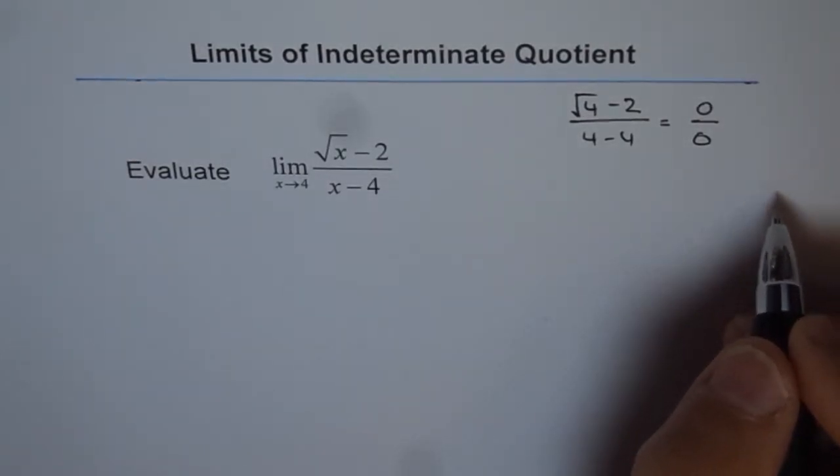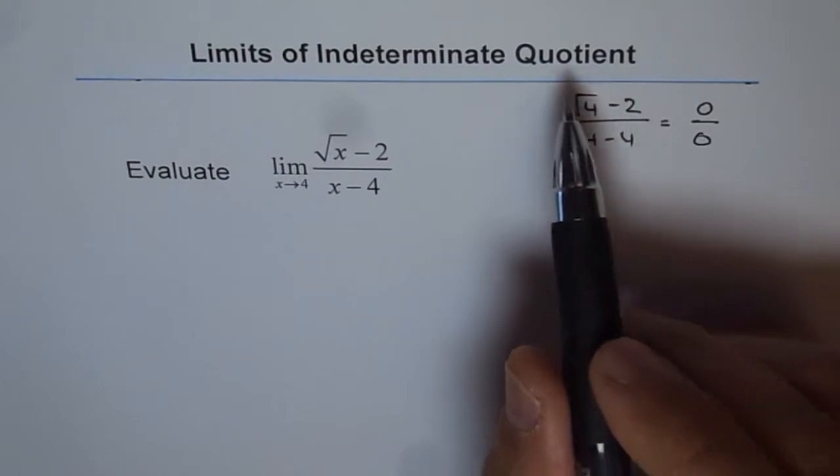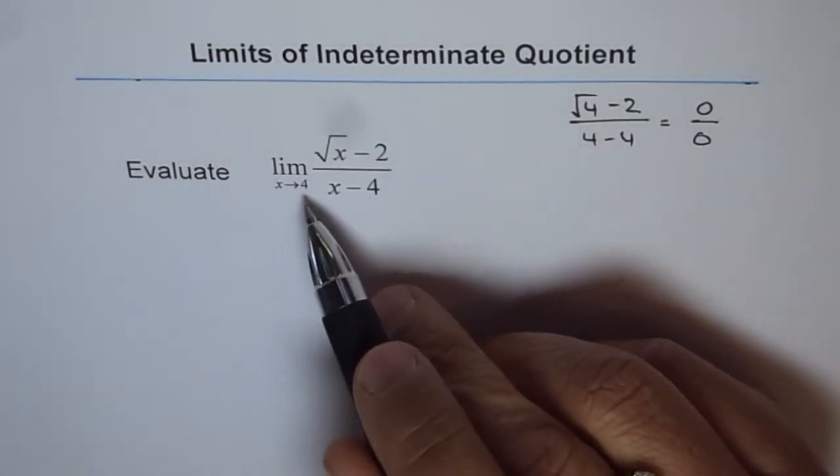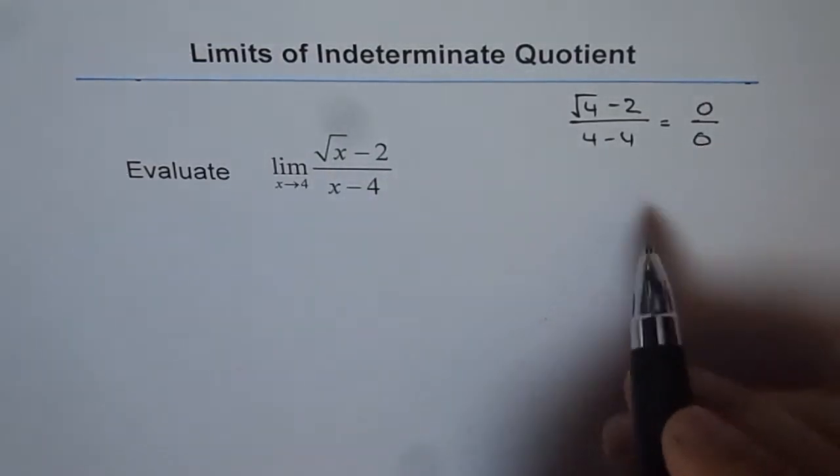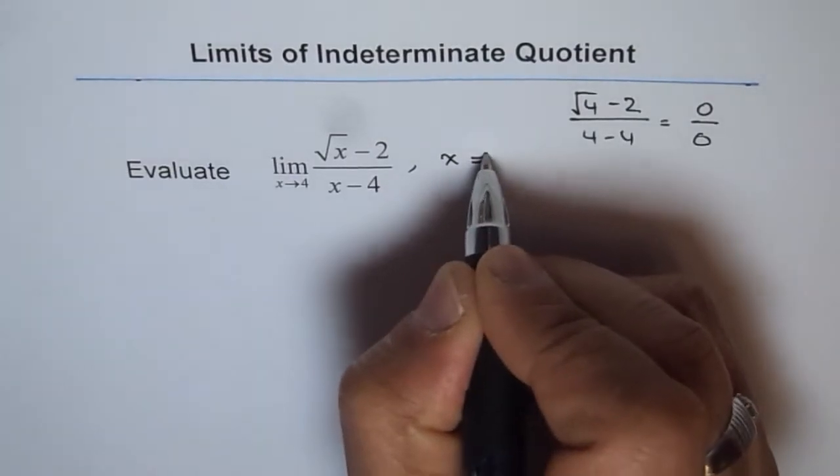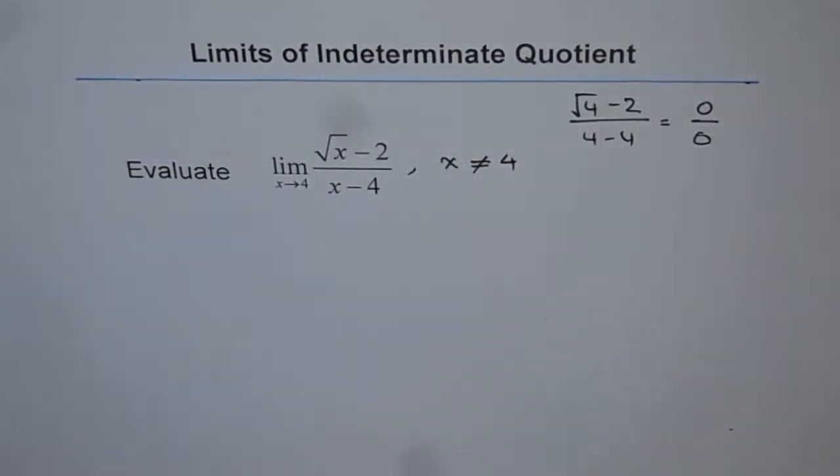So, as you have seen in this playlist, most of the questions which we have selected, they are all indeterminate questions where when we substitute the limiting value, we land up with 0 over 0. Now, so here x is not equal to 4. 4 is not in the domain of our function.